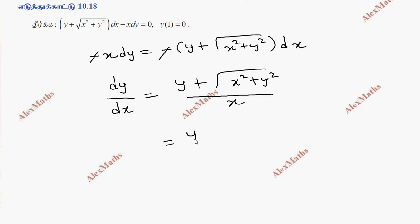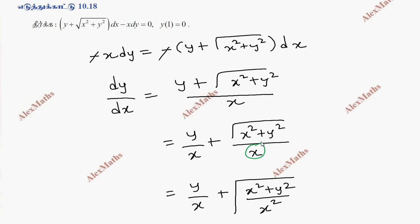We have root of x squared plus y squared. If we take the root, we get root of x squared plus y squared divided by x squared, which separates to root of x squared.